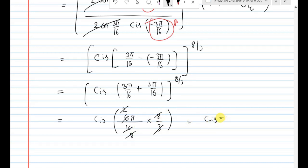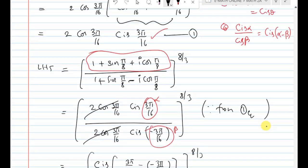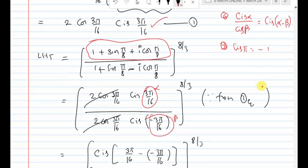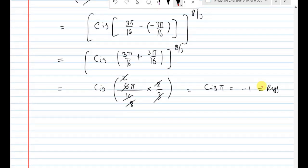The final answer is cis(π), and cis(π) = cos(π) + i·sin(π) = -1, which is the RHS. Hence proved.